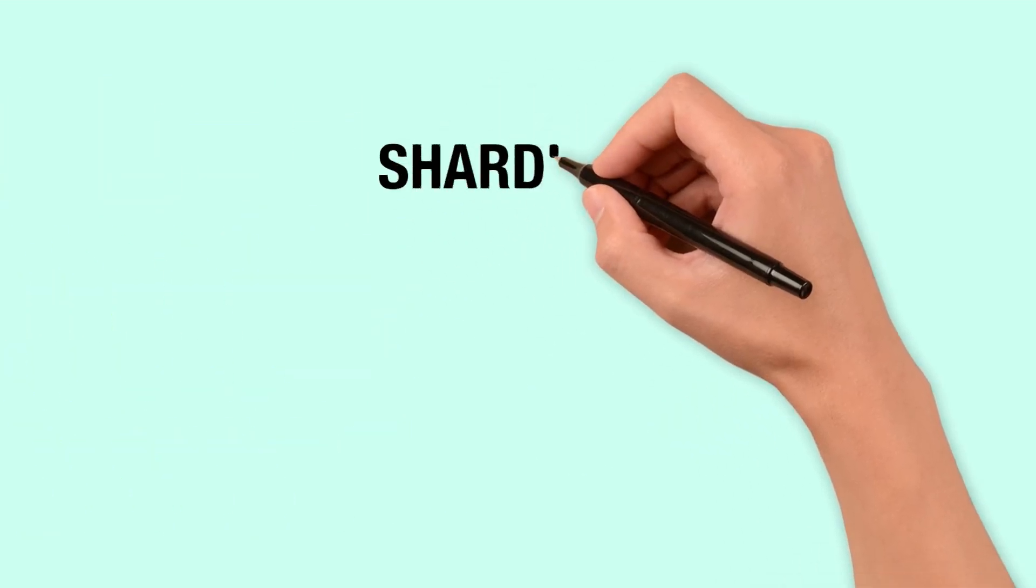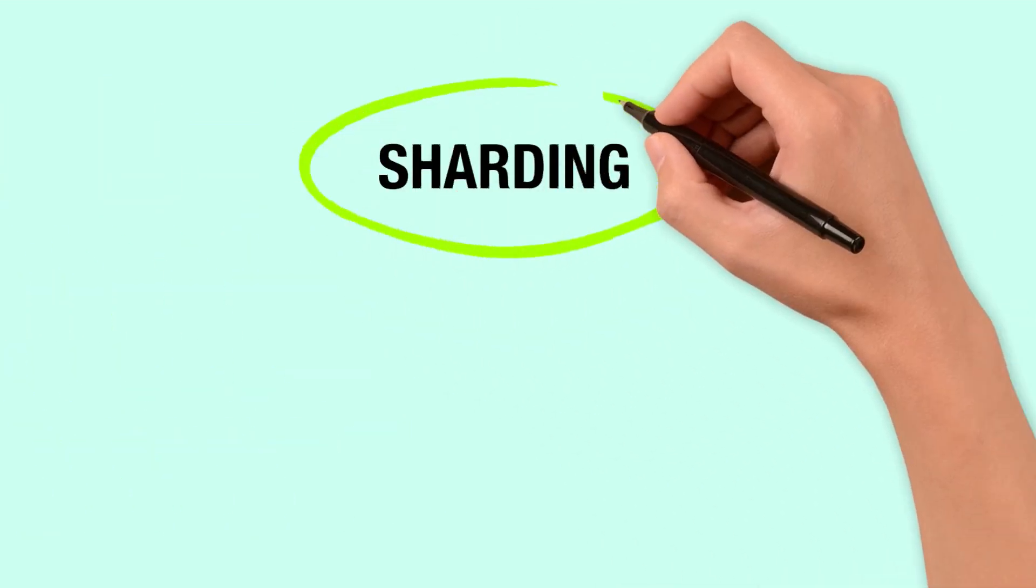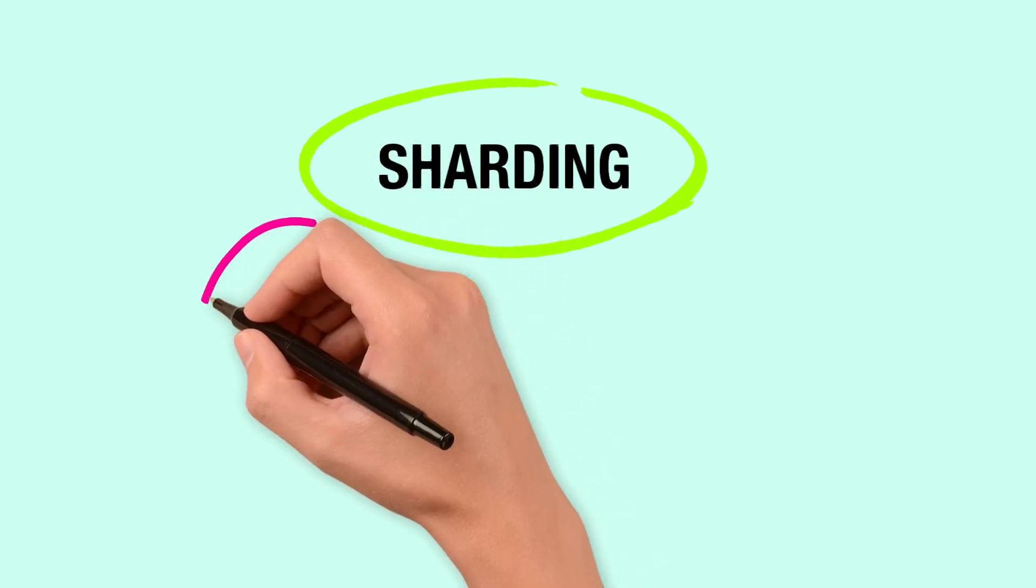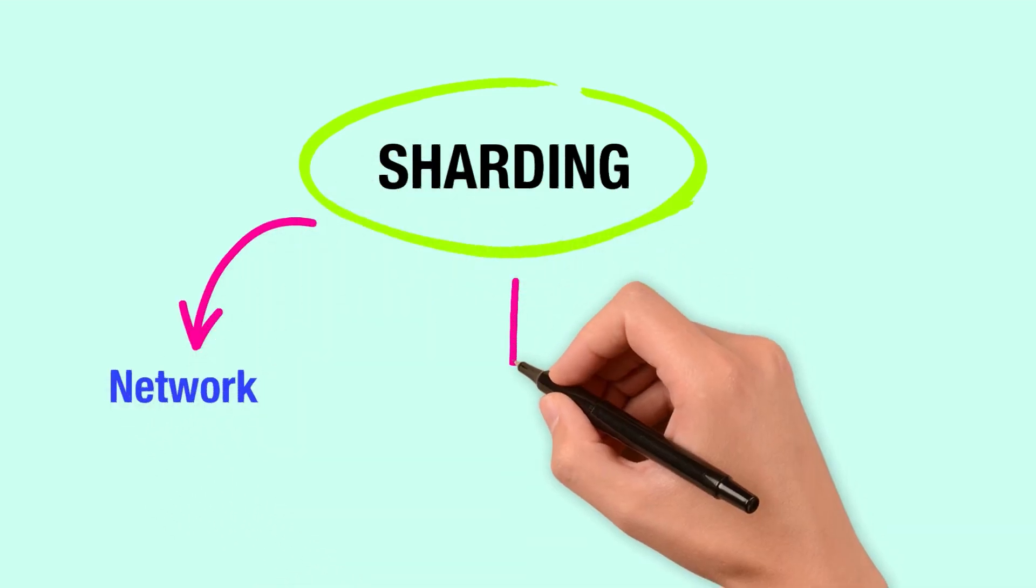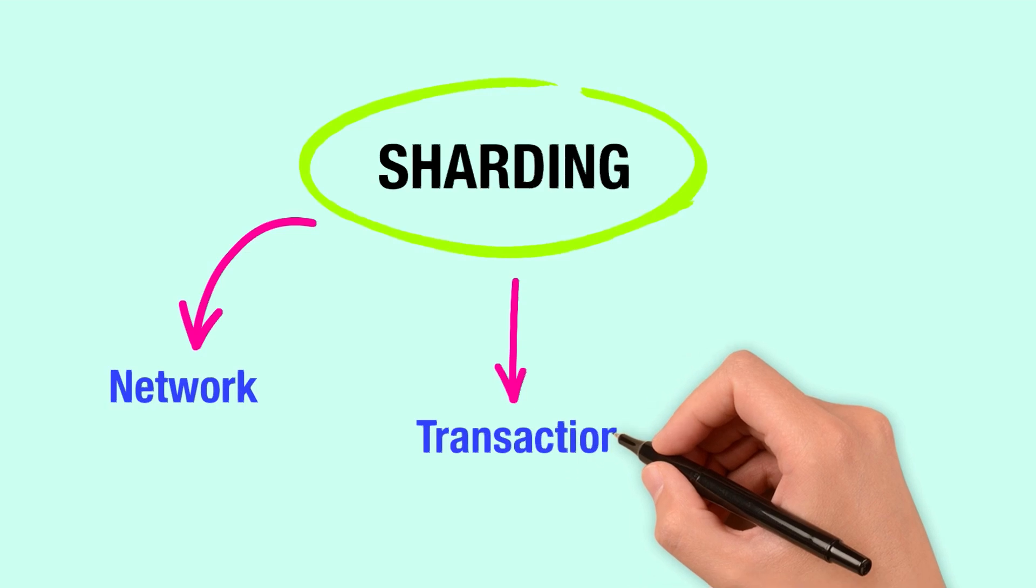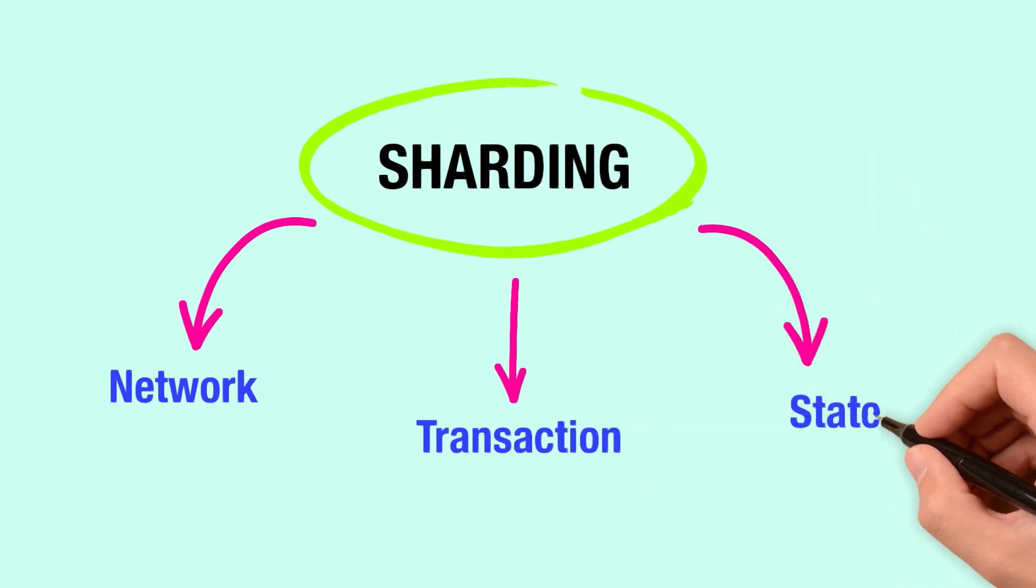While promising, sharding itself has several distinct types and approaches. Sharding is divided into three key categories: network, transaction, and state sharding, each with unique functions and benefits.